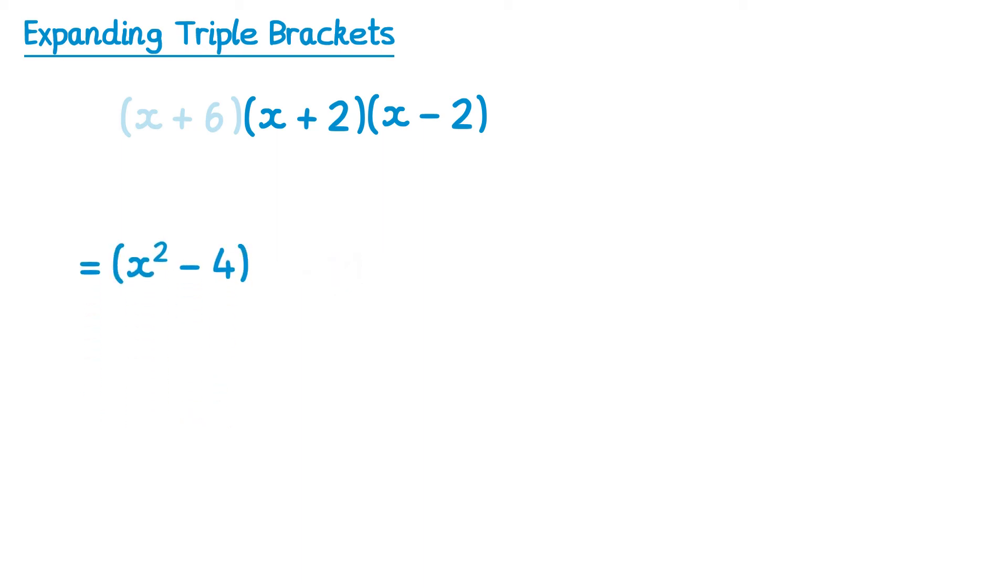So we can put this in brackets, and say that these two brackets here are the same as this single bracket here. All we need to do then is reintroduce our x plus 6, and multiply these two together. You can see because it was the difference of two squares, it reduced the amount of terms that we need to multiply, so sometimes spotting this can help make your life easier.